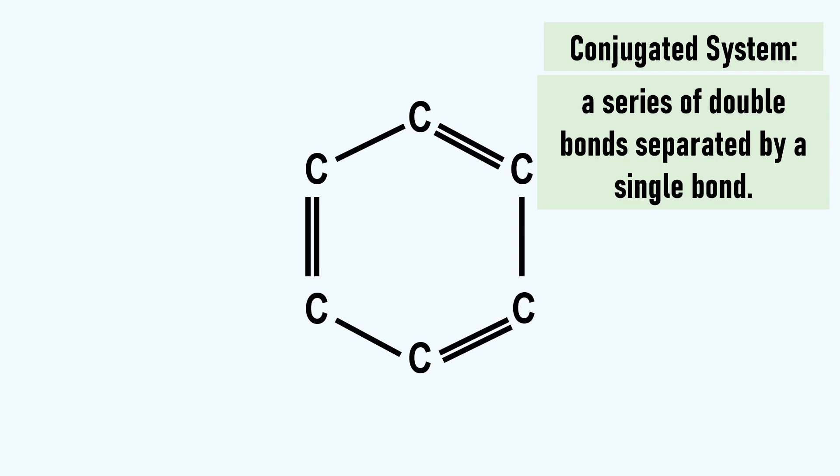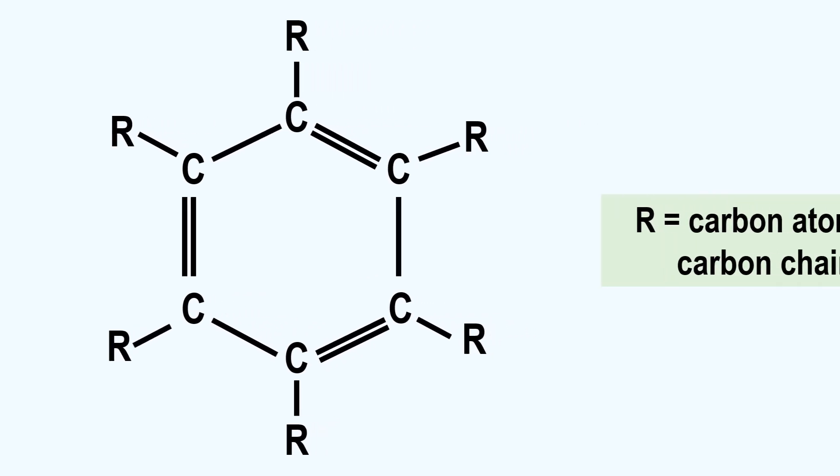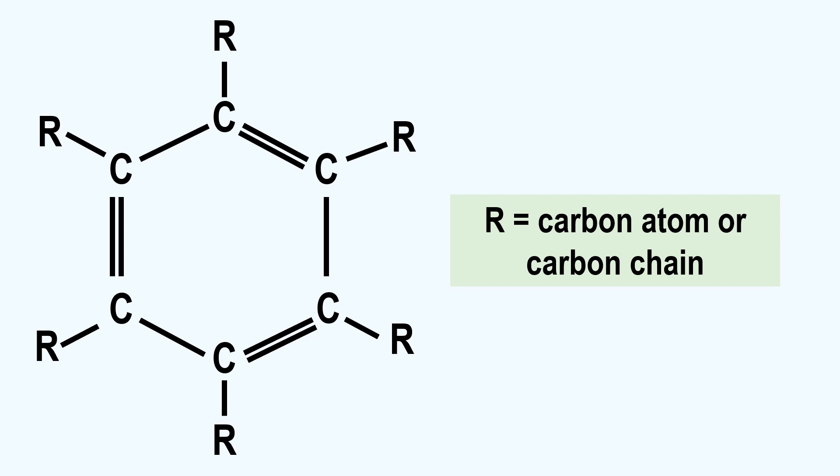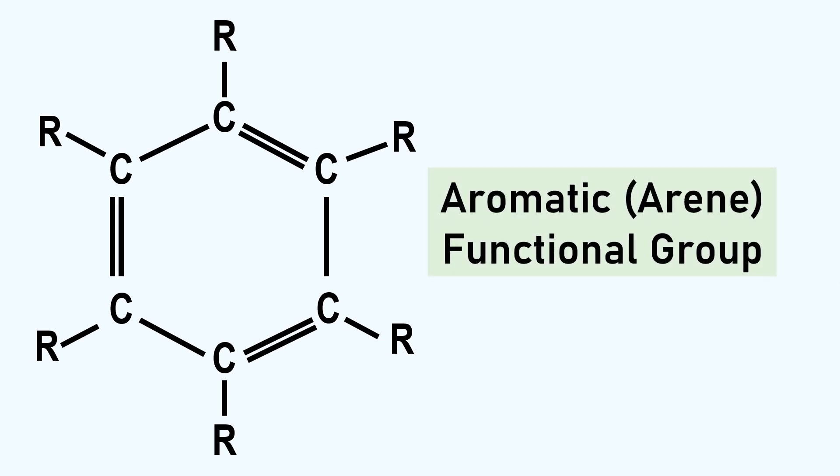In this example, I'll add an R group to each carbon to complete their octet. Recall, an R group is a carbon atom or some carbon chain. This conjugated six-carbon ring is called an aromatic functional group. It can also be called an arene functional group.